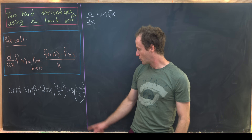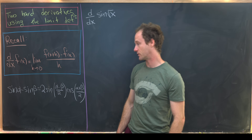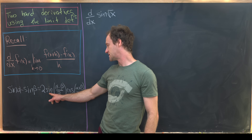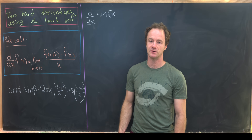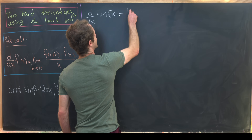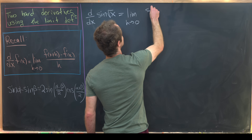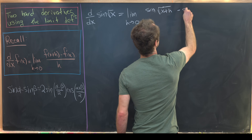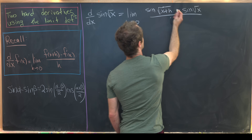Along the way we'll use the following trigonometric identity, which I will not derive: sin α - sin β = 2·sin((α - β)/2)·cos((α - β)/2). So we can write the limit definition as the limit as h approaches zero of [sin(√(x+h)) - sin(√x)] / h.